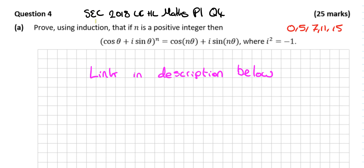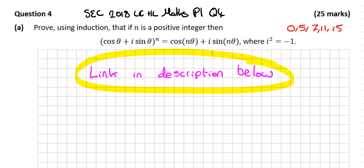In this video we're looking at the SEC 2018 Leaving Cert Higher Level Maths Paper 1 Question 4. It's a complex numbers question — prove using induction. Actually, I'm not going to answer this question; the link to the answer is in the description below. I've made a video on it covering all proofs that are on the Leaving Cert insert.